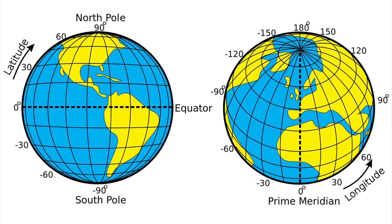When it comes to latitude, the equator is the most important line — that line that runs through the centre of the Earth. This is because this line will tell us, by plotting latitude, how far north or south you are of that line.